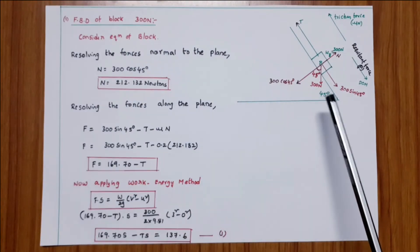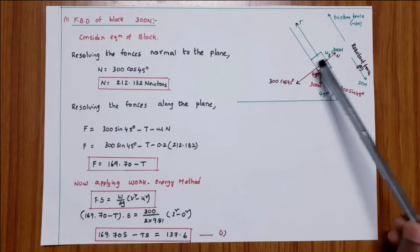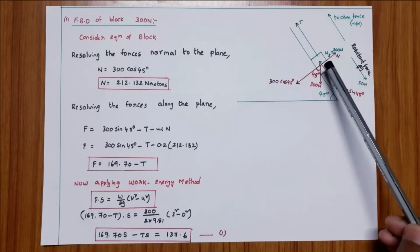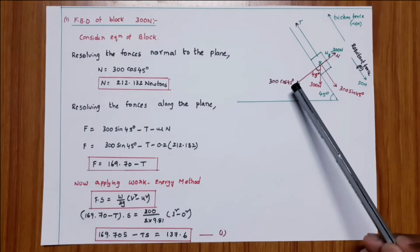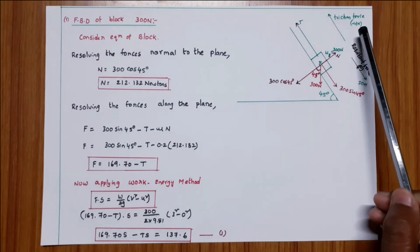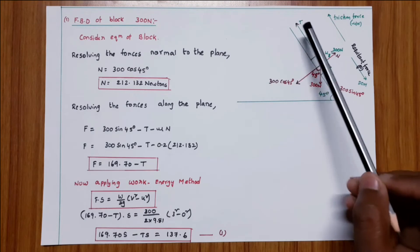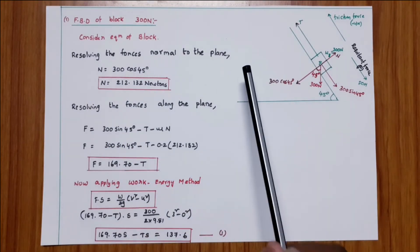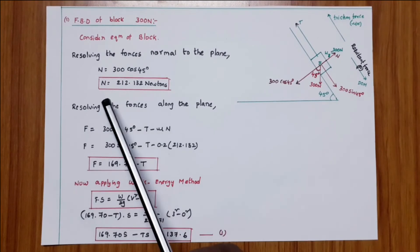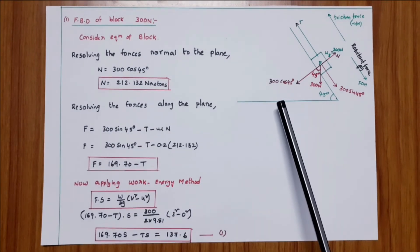FBD of block B, 300 Newtons, on the 45-degree incline. The component along the plane is 300 sin 45, and the component normal to the plane is 300 cos 45. The direction of motion is downwards. Friction force acts opposite to the direction of motion, so mu×N acts upward along the plane. Tension T acts upward along the plane (away from the block). Resolving forces normal to the plane: N equals 300 cos 45, so N equals 212.132 Newtons.